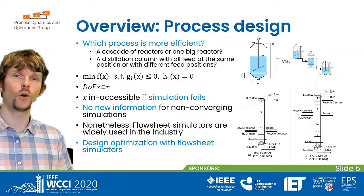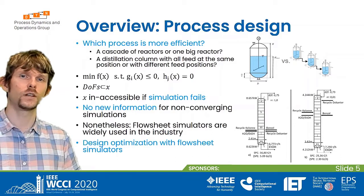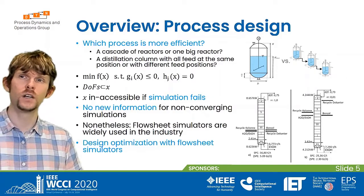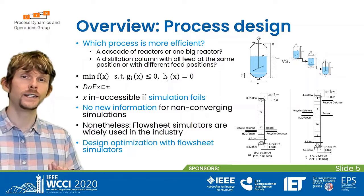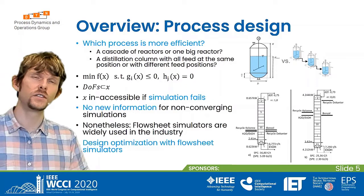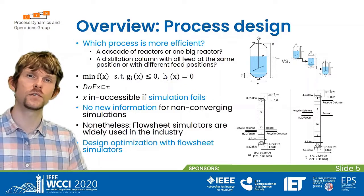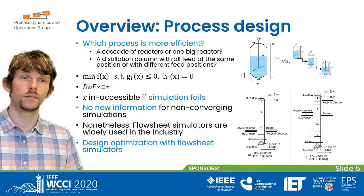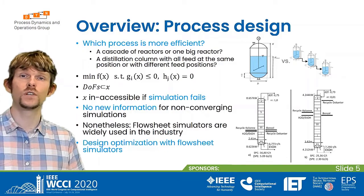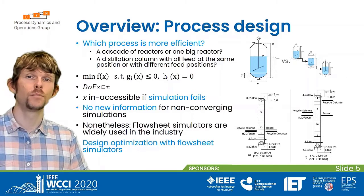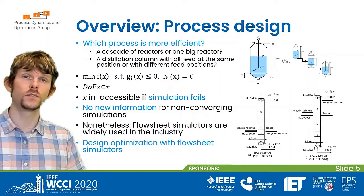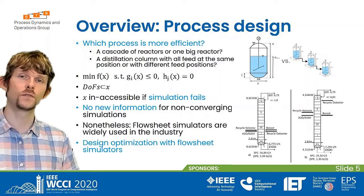From our perspective as optimizers, we minimize a cost function f(x) subject to some constraints. Our degrees of freedom are only a subset of x, because x highly depends on the simulation outcome — we need to know the concentrations in the streams, which are calculated by the flow sheet simulator. If it fails to calculate, we cannot evaluate the function and get nearly no new information. Nevertheless, flow sheet simulators are widely used in industry, and that's why we do design optimization with them.